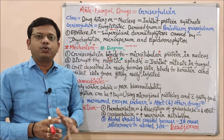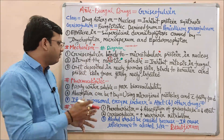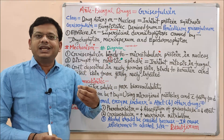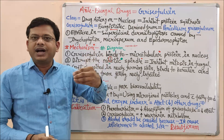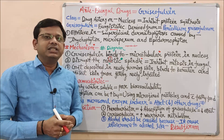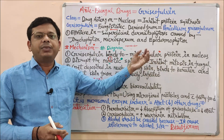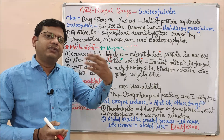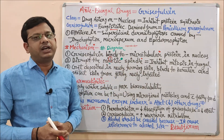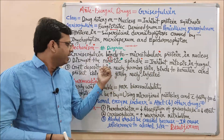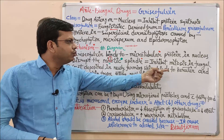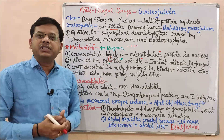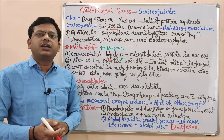This affects fungal growth and division. The drug gets deposited in newly forming skin. It binds to keratin and protects the skin from getting newly infected — it also attempts to protect future incoming keratinized parts from infection. So this is the theoretical mechanism of Griseofulvin.